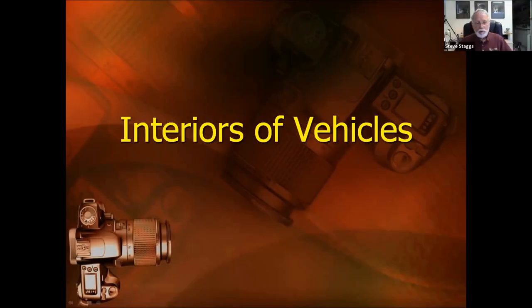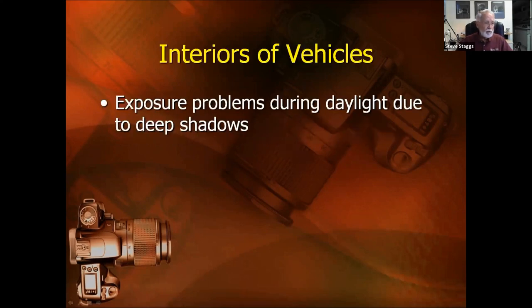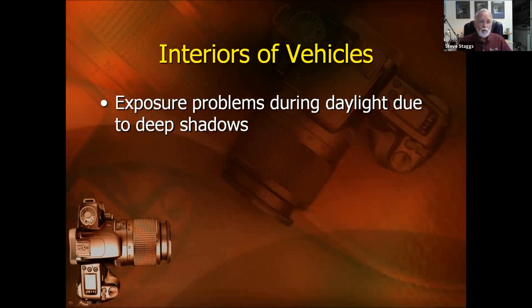Let's talk about a very common situation where we can have a lot of difficulty photographing our scenes, and that is the interior of vehicles. One of the big problems with vehicle interiors is basically the exposure — this would be for daylight. During daylight, we get a lot of sunshine coming into the vehicle through the windows, so we'll have some bright highlight areas but also some really deep shadows caused by the configuration of the vehicle itself. It's not unusual to have a photograph that comes out much too dark in some areas and a little too bright in others.